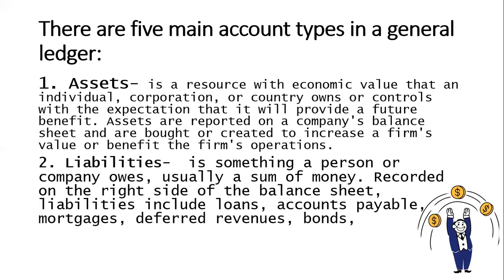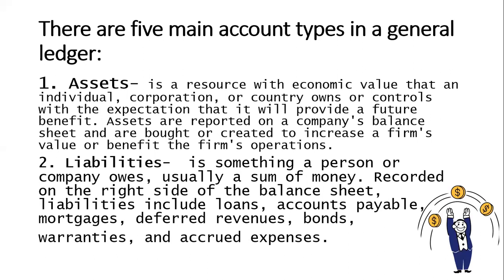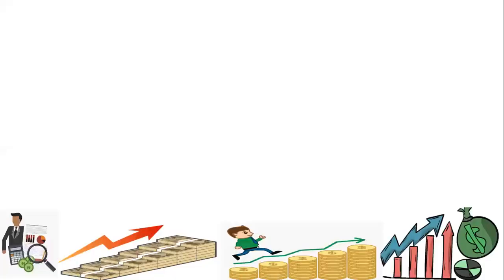Second, liabilities. Liabilities refer to what a person or company owes, usually a sum of money, recorded on the right side of the balance sheet. Liabilities include loans, accounts payable, mortgages, deferred revenues, bonds, payments, warranties, and accrued expenses — essentially your loans, rents, and other business obligations.